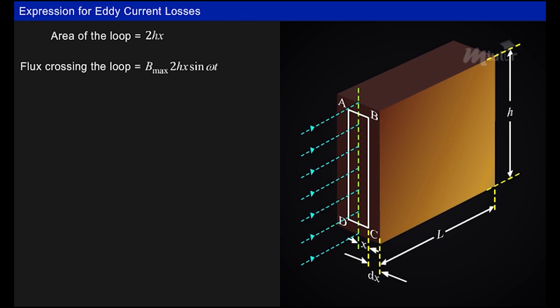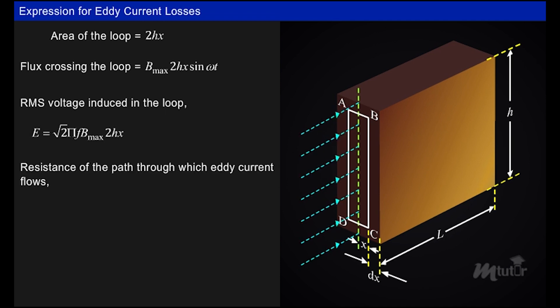The RMS voltage induced in the loop e is equal to √2 × 2πf × B_max × 2hx. Resistance of the path through which eddy current flows, R_path, is equal to ρ × (2h + 4x) / (l × dx), where ρ is the resistivity of the material.